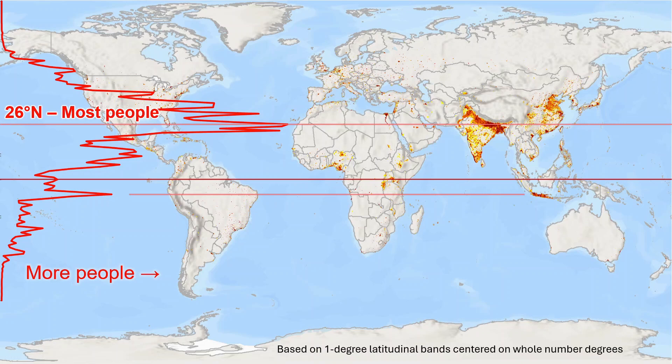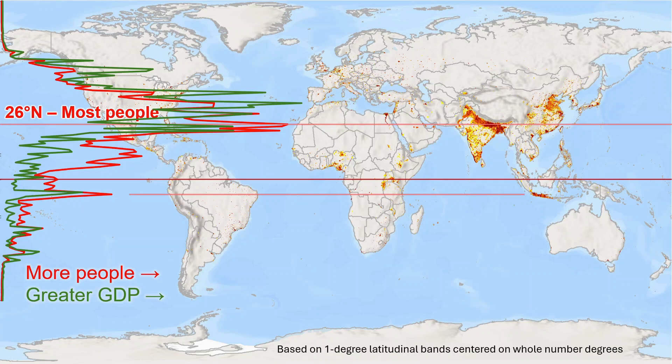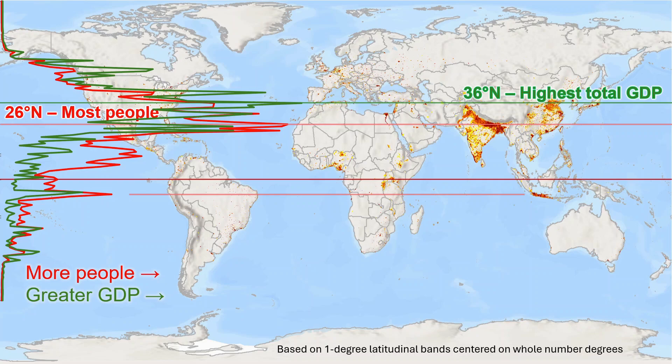For wealth, measured by a gridded GDP product, that shows some major peaks shifted further north than the most populated latitudes, with a maximum GDP peak at 36 degrees north, which runs through a wide span of North America, northernmost Africa, and some of the richer parts of East Asia. Secondary peaks for GDP align with wealthy regions further north in North America and then Europe, and further south for some of the wealthy population centers in South, East, and Southeast Asia.